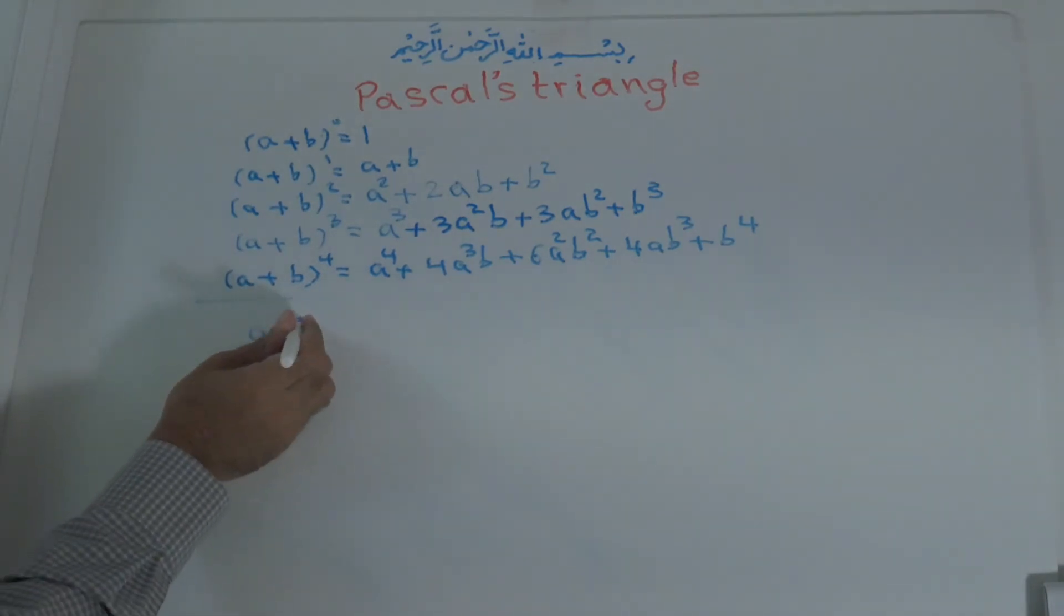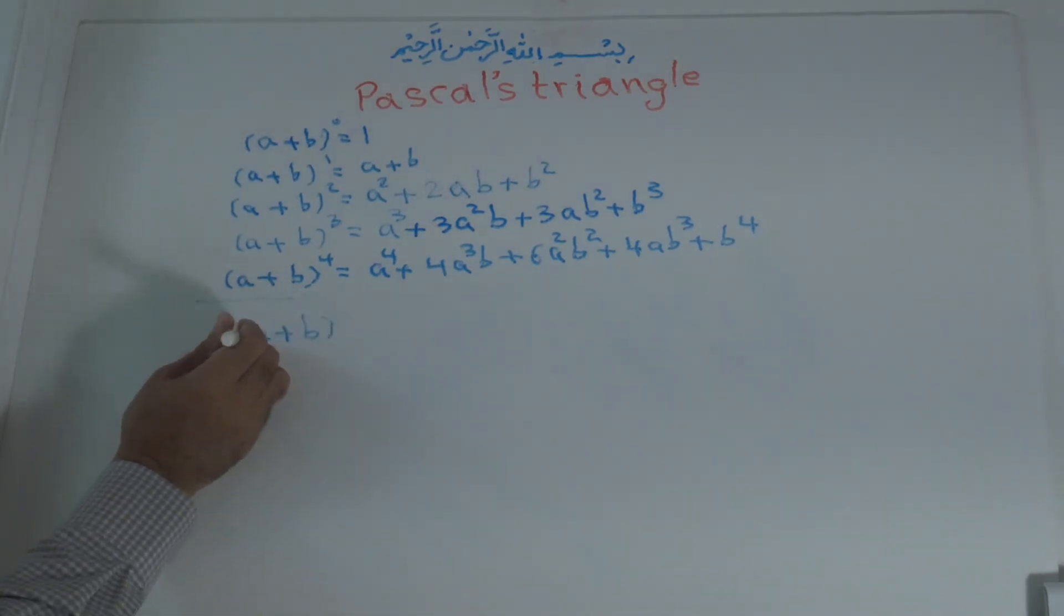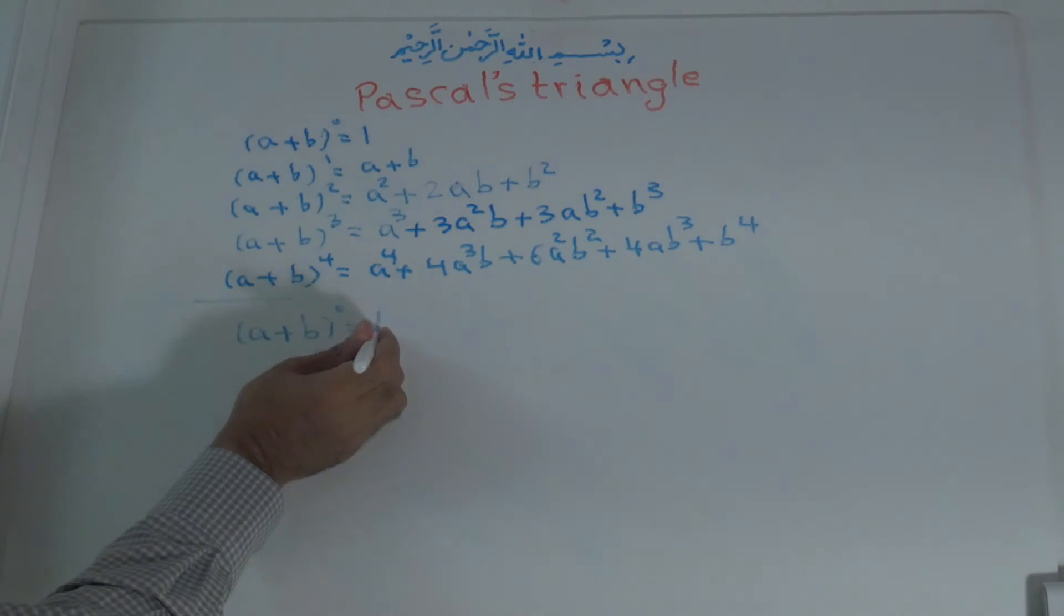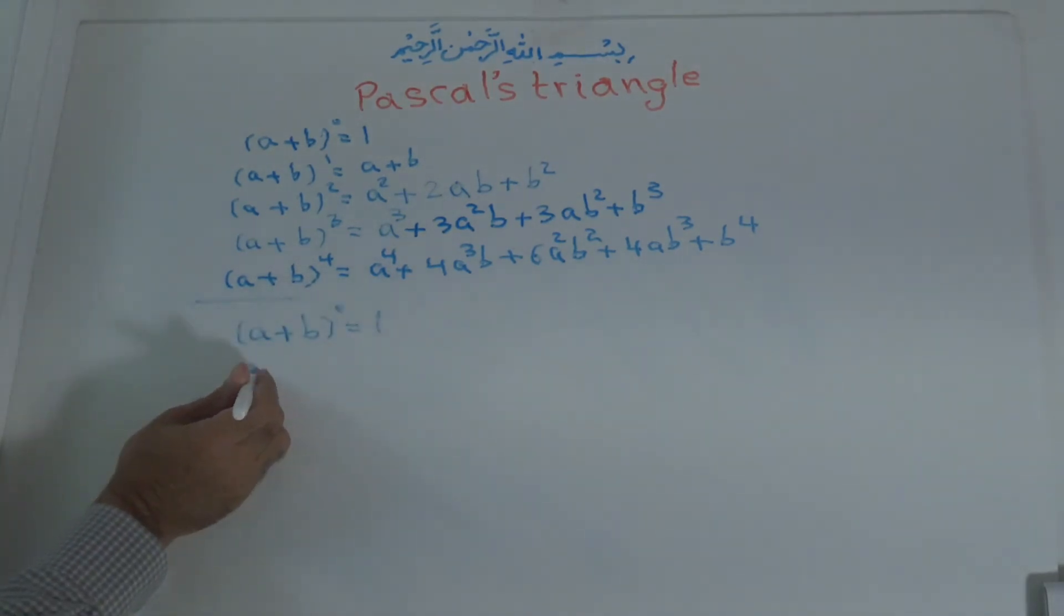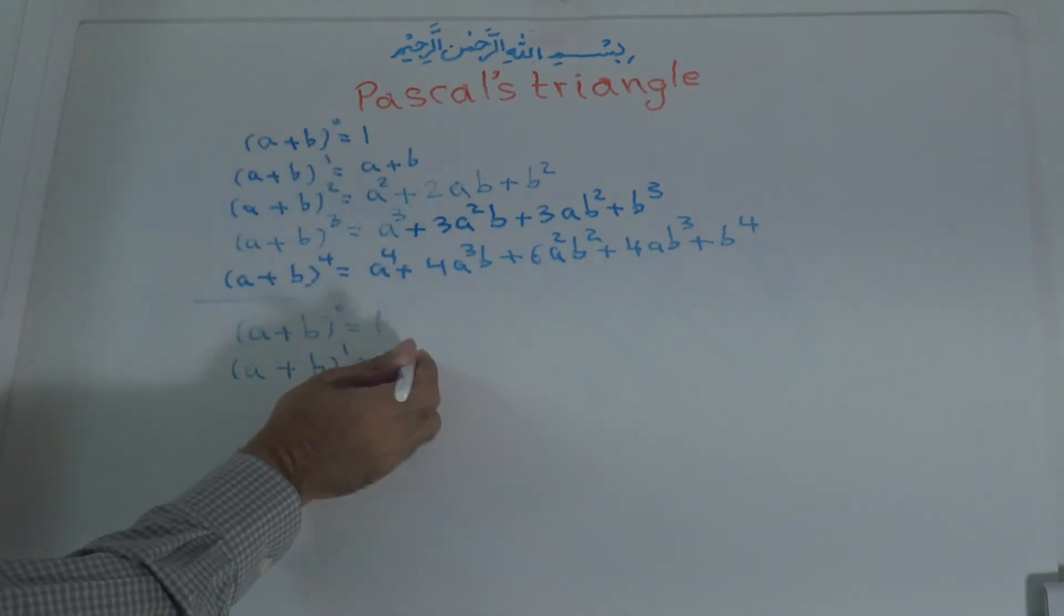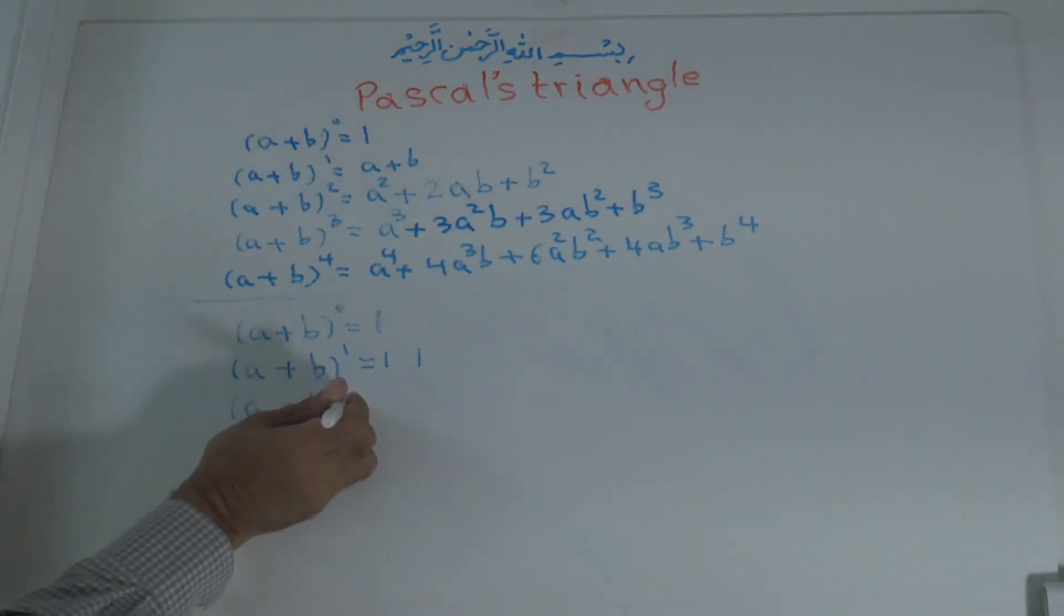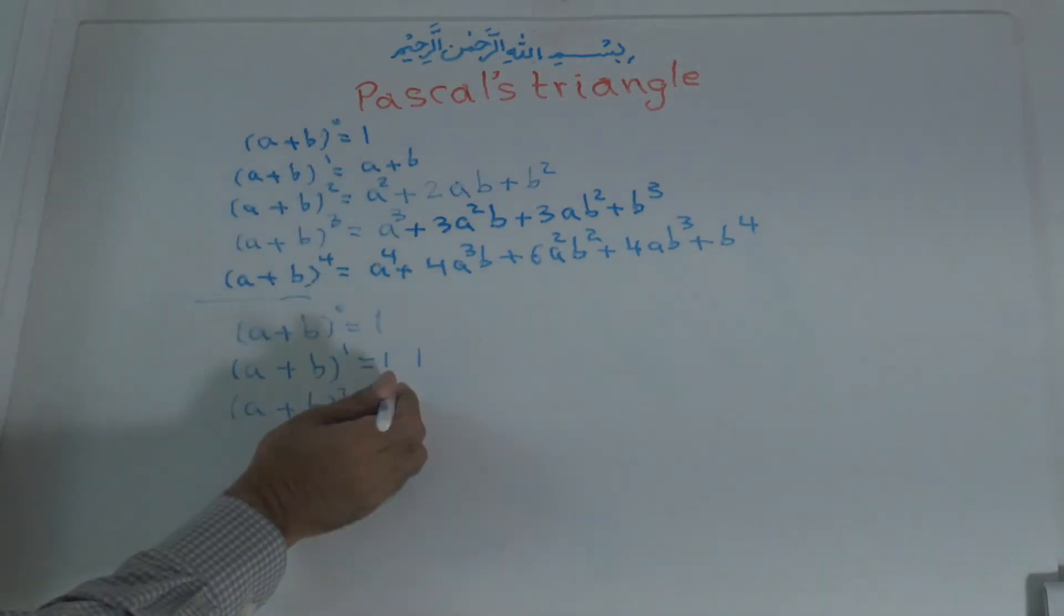A plus B to the power of 0, the coefficient is 1. For A plus B to the power of 1, the coefficient of the first term is 1 and the second term is also 1. For A plus B to the power of 2, the coefficient of the first term is 1, then 2, then 1.